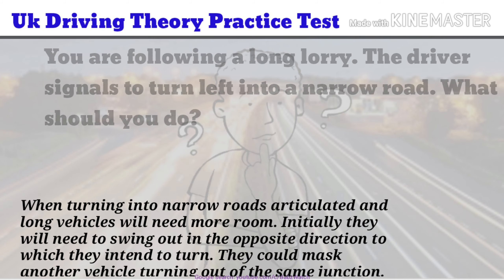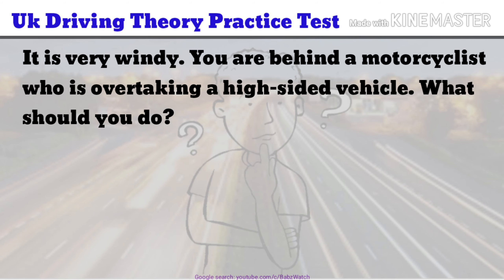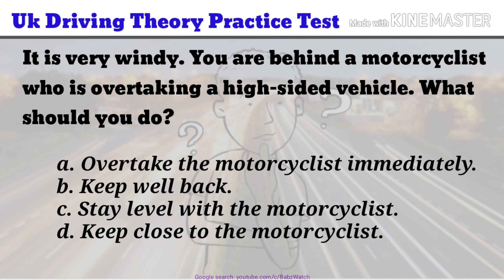UK Driving Theory Practice Test Question 13 of 50. It is very windy. You are behind a motorcyclist who is overtaking a high-sided vehicle. What should you do? a. Overtake the motorcyclist immediately. b. Keep well back. c. Stay level with the motorcyclist. d. Keep close to the motorcyclist. The correct answer is b.